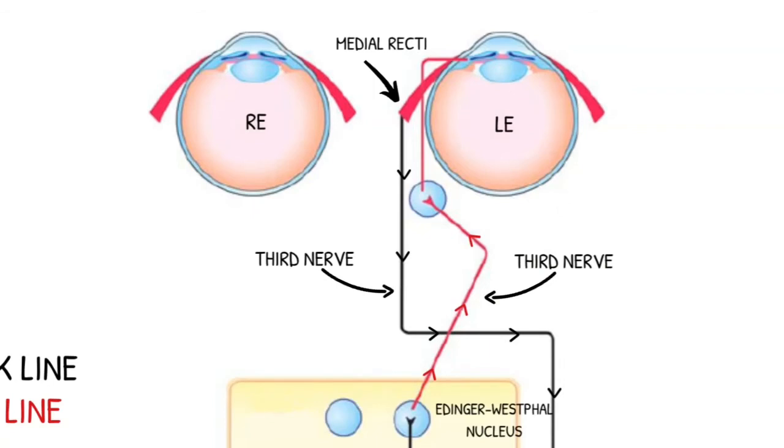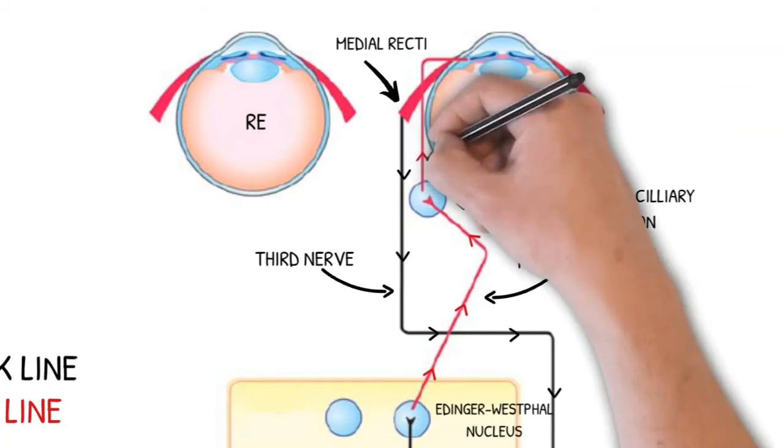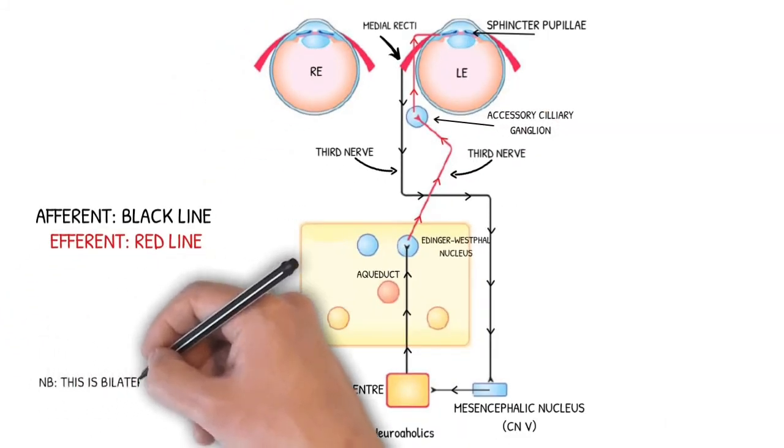From the third nerve, efferent fibers of the convergence reflex relay in the accessory ciliary ganglion and from there reach the sphincter pupillae. Note that this is a bilateral pathway.